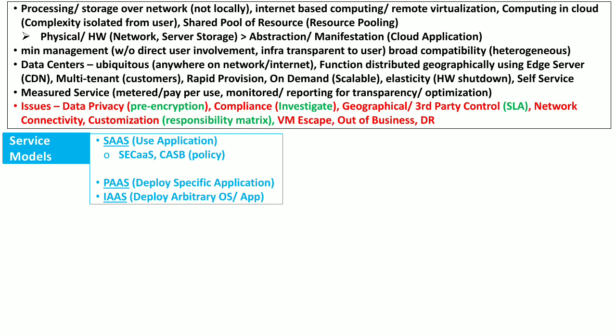Examples of security as a service include vulnerability testing, penetration testing, and antivirus services. Another related concept is the cloud access security broker (CASB), which is a policy enforcer between the cloud service provider and the user organization. The second model is platform as a service — an example is being provided with a platform to deploy a specific application. The third is infrastructure as a service, where you can deploy any operating system or any application.